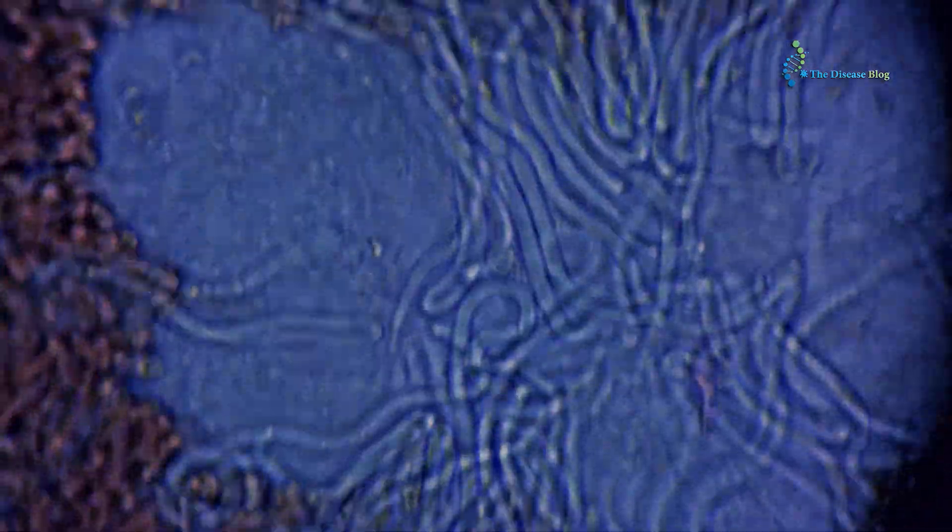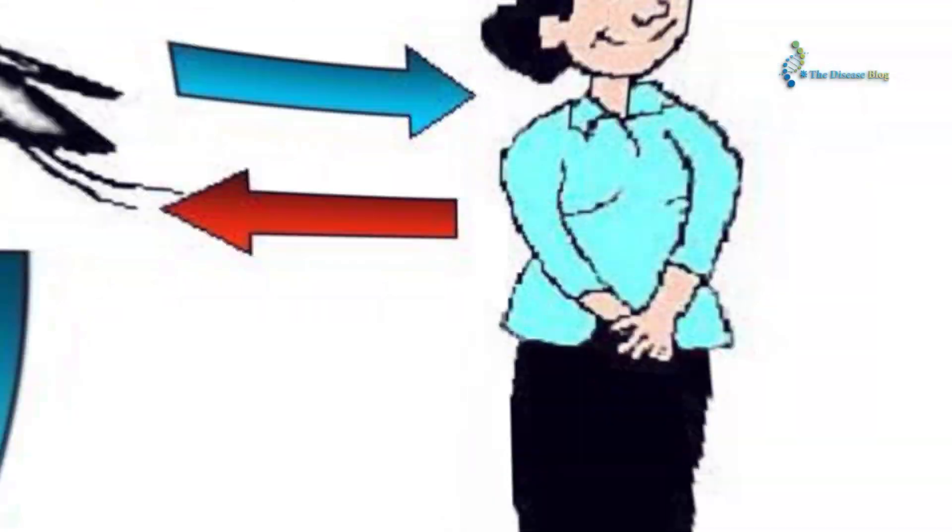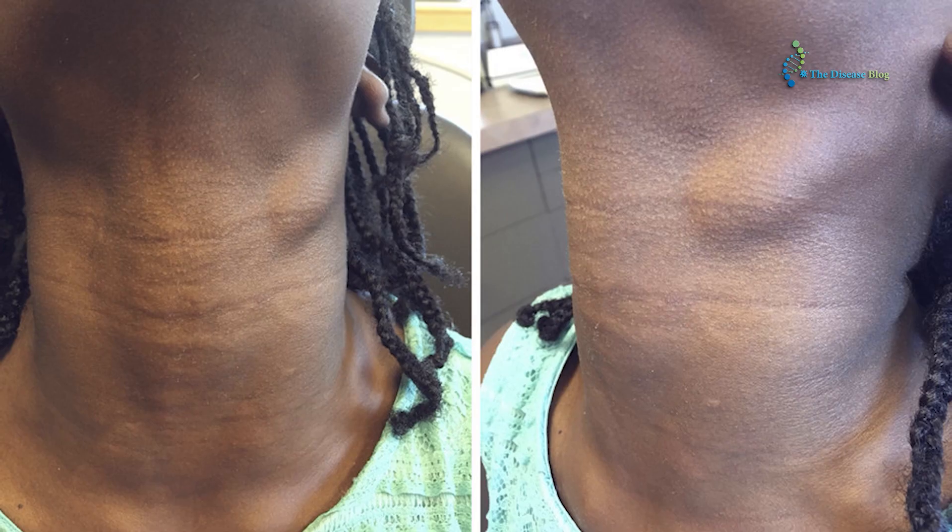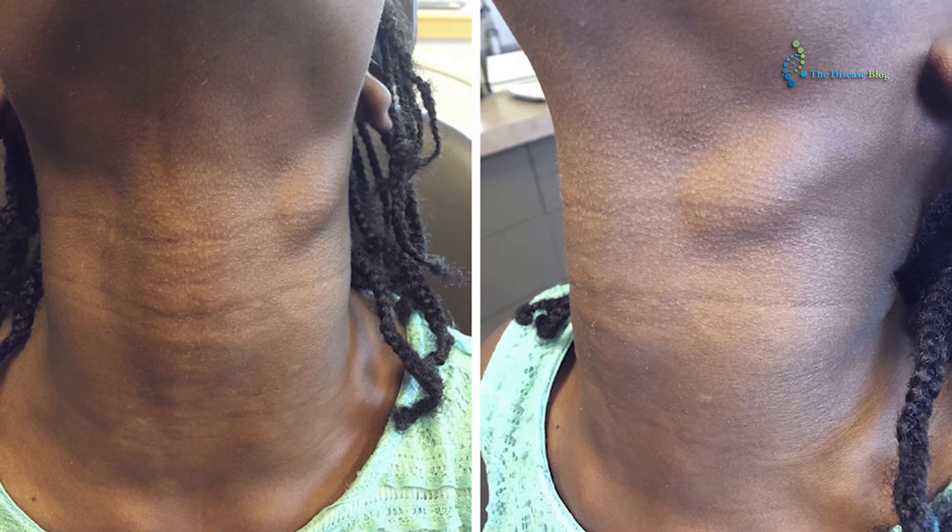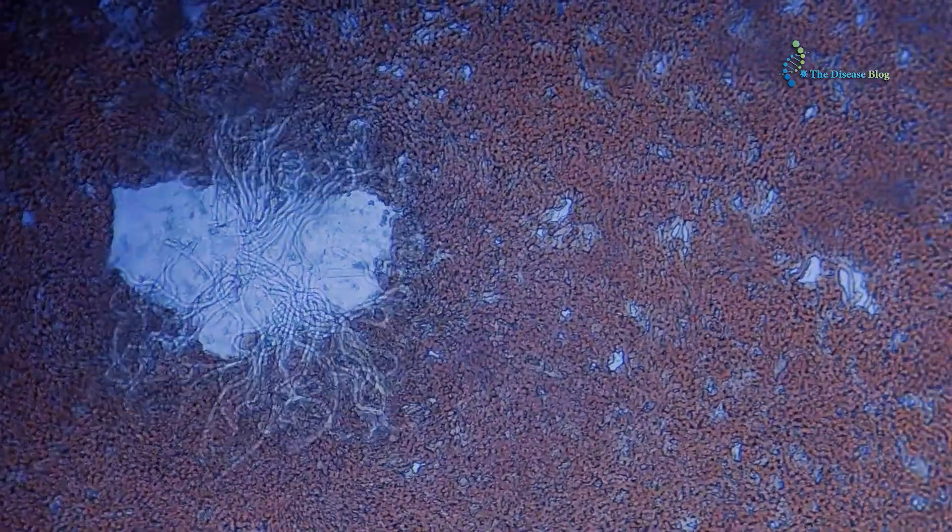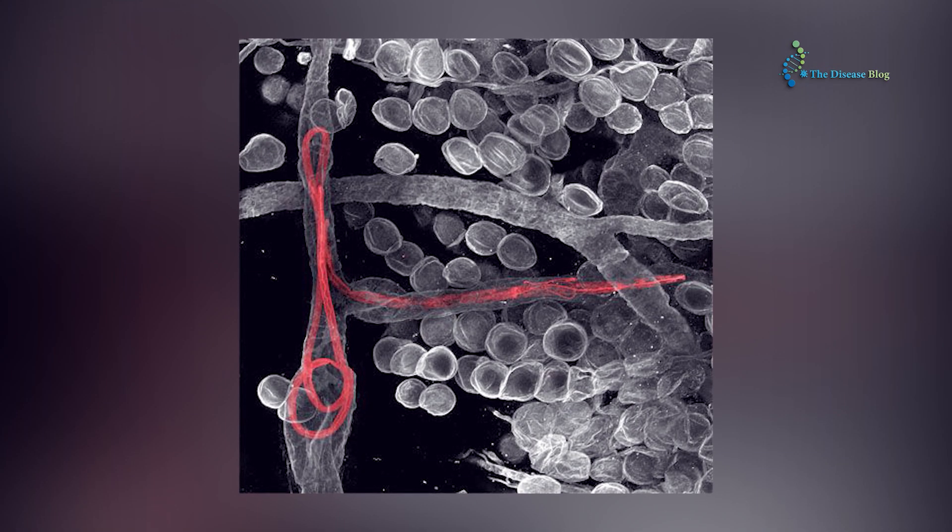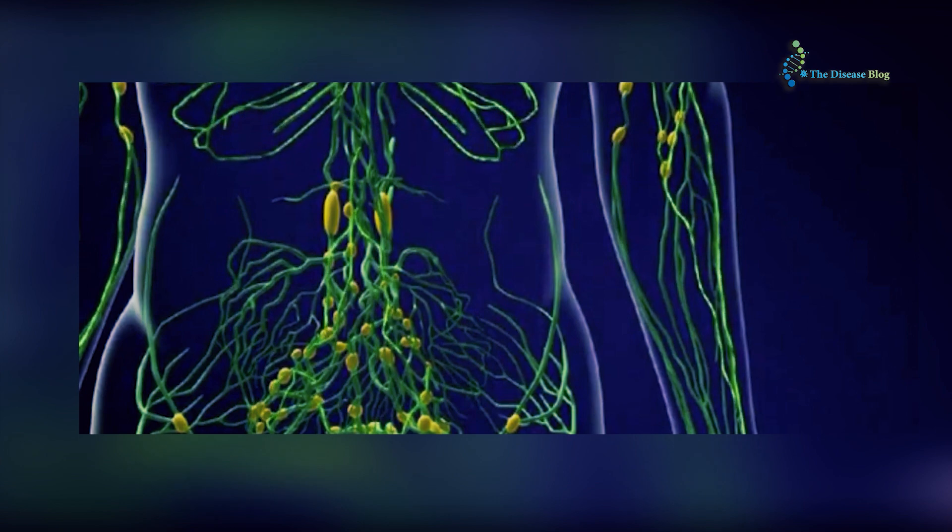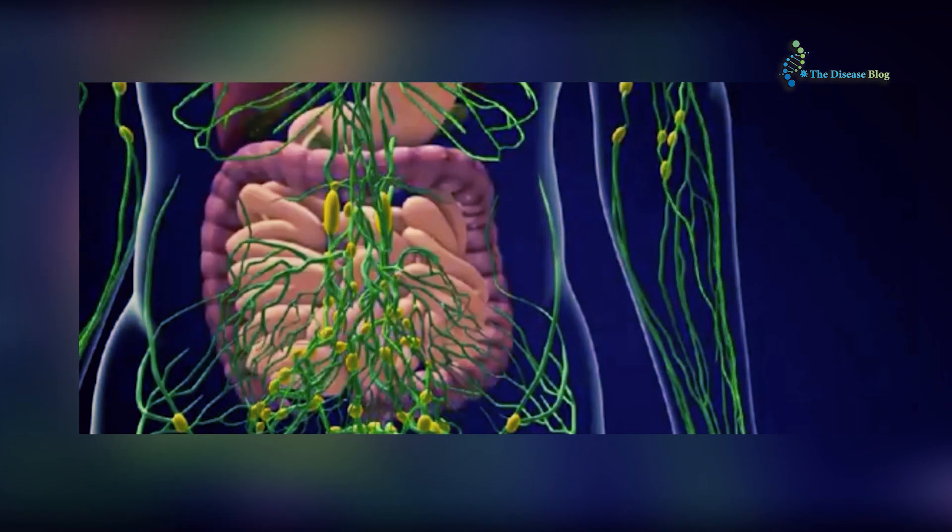Adult worms reproduce multiple immature larvae called microfilariae. These microfilariae circulate in the blood and are taken up by another mosquito when it bites an infected individual for a blood meal. That's how this cycle continues and transmission occurs from person to person. Symptoms include severe inflammation due to the reactive response of the immune system against microfilariae and adult worms.